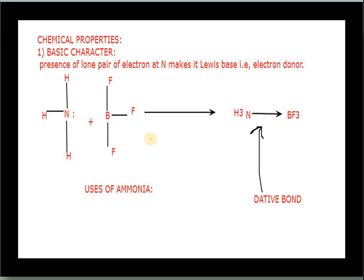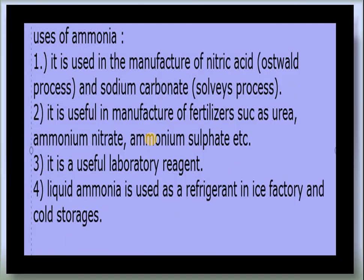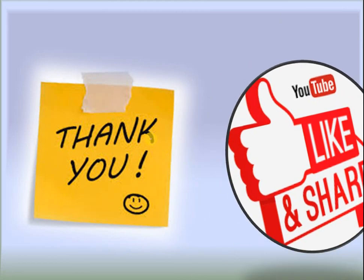Chemical properties of ammonia include its basic nature: nitrogen donates its lone pair to form a dative bond, for example with boron. Ammonia is used in the manufacture of nitric acid by the Ostwald process, and in the manufacture of fertilizers such as urea, ammonium nitrate, and ammonium sulfate. Liquid ammonia is used as a refrigerant in ice factories and cold storage.